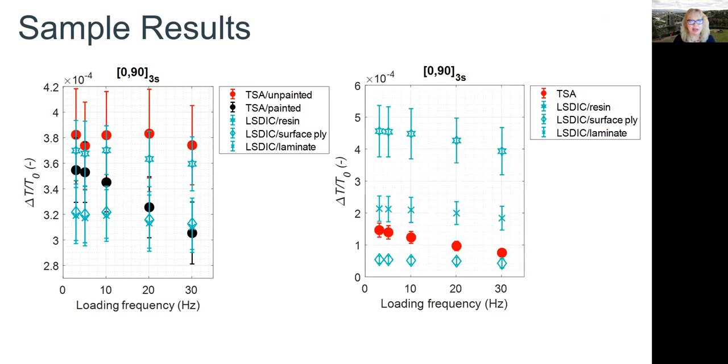In our carbon fiber material, we can see that the thermoelastic response is changing. It's changing from the response that can be related to the laminate, which is a kind of homogenized response through the stack, indicating that heat transfer is taking place to the individual surface ply value at the higher loading frequency, exactly as predicted. We looked at all the other cases, and they all correlated with the predictions.